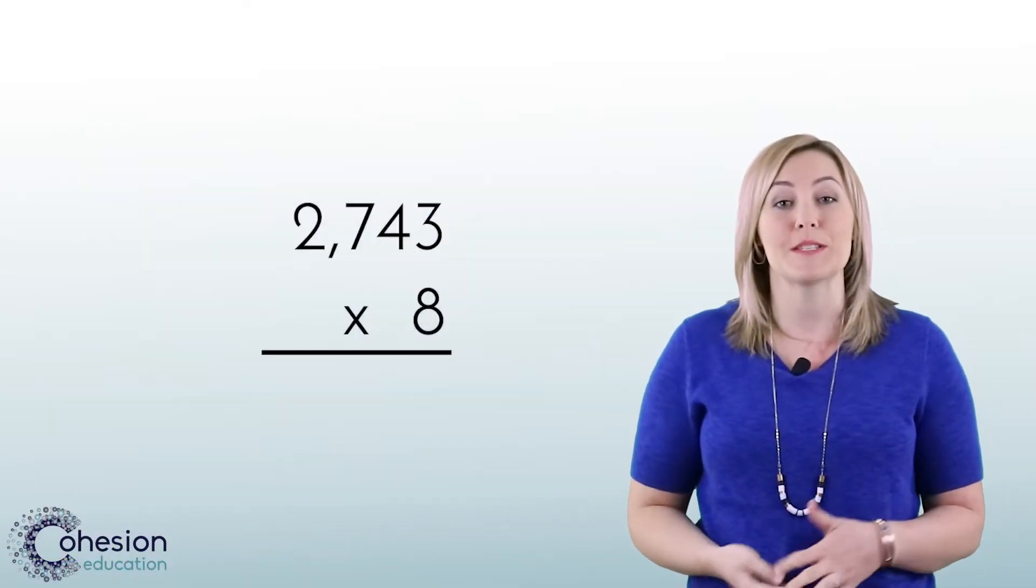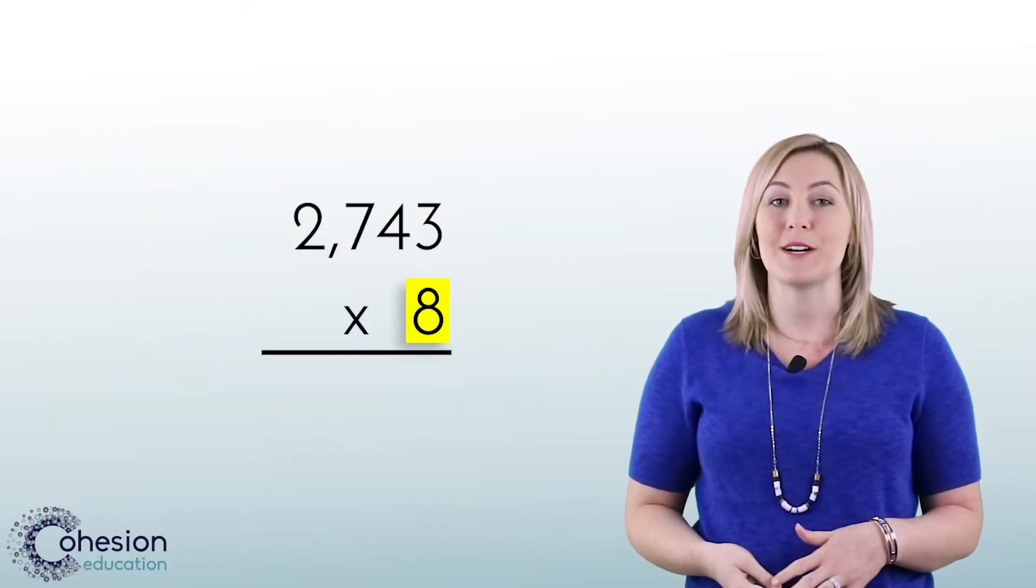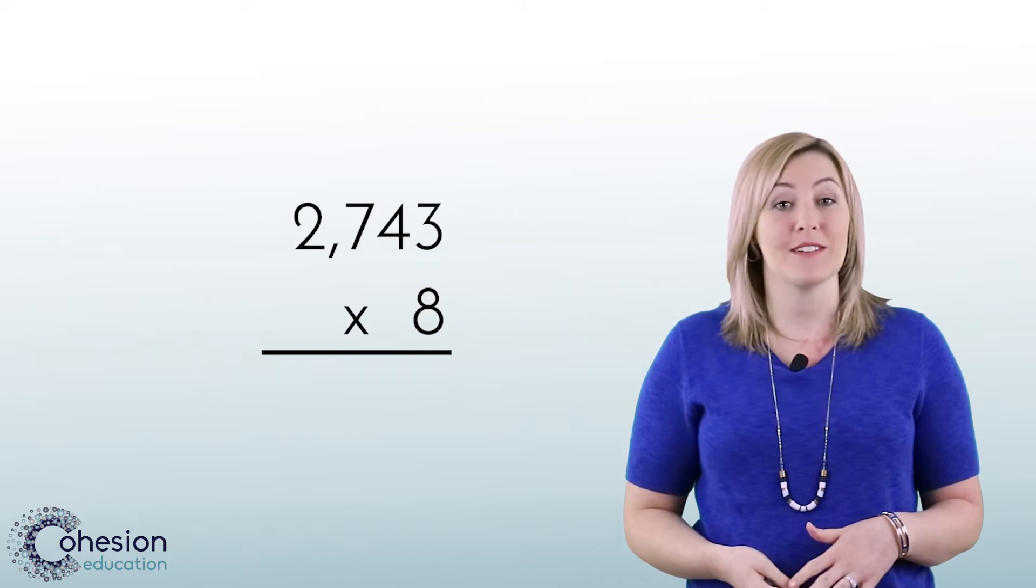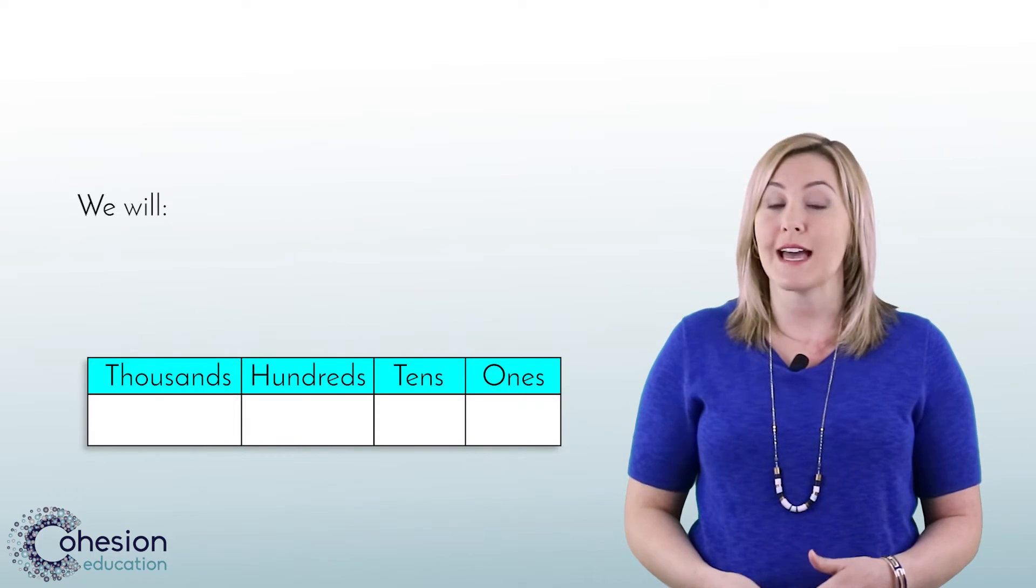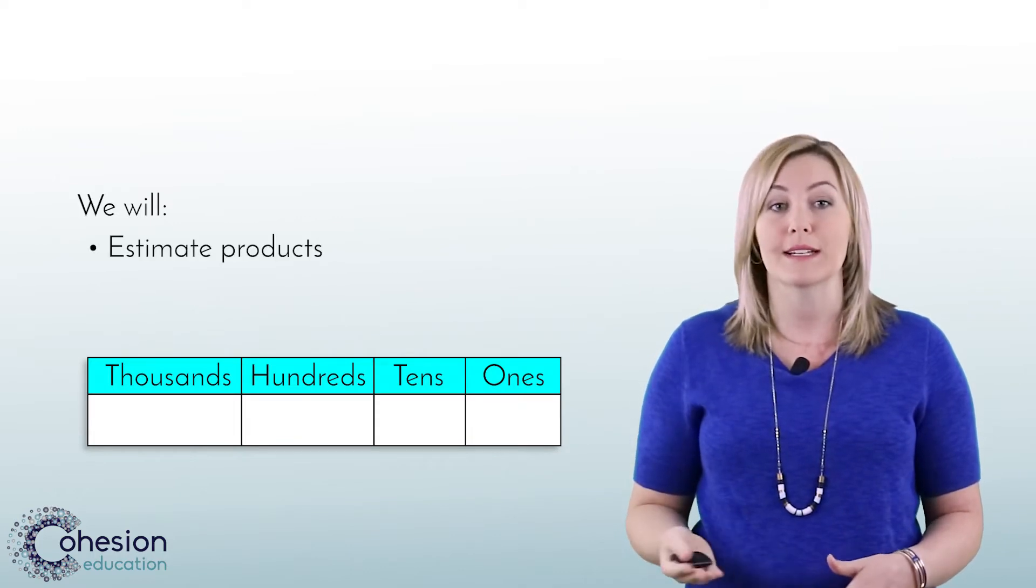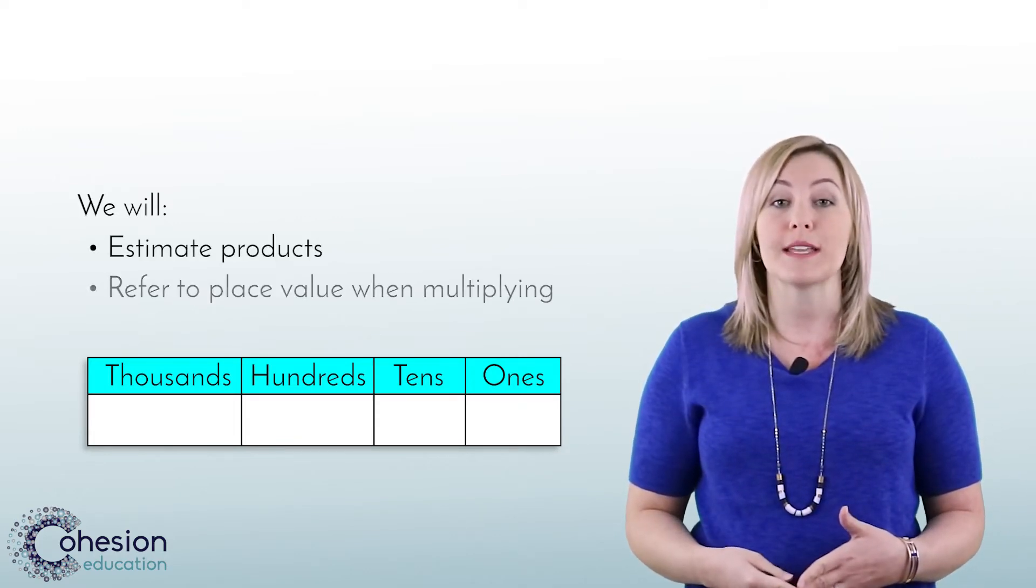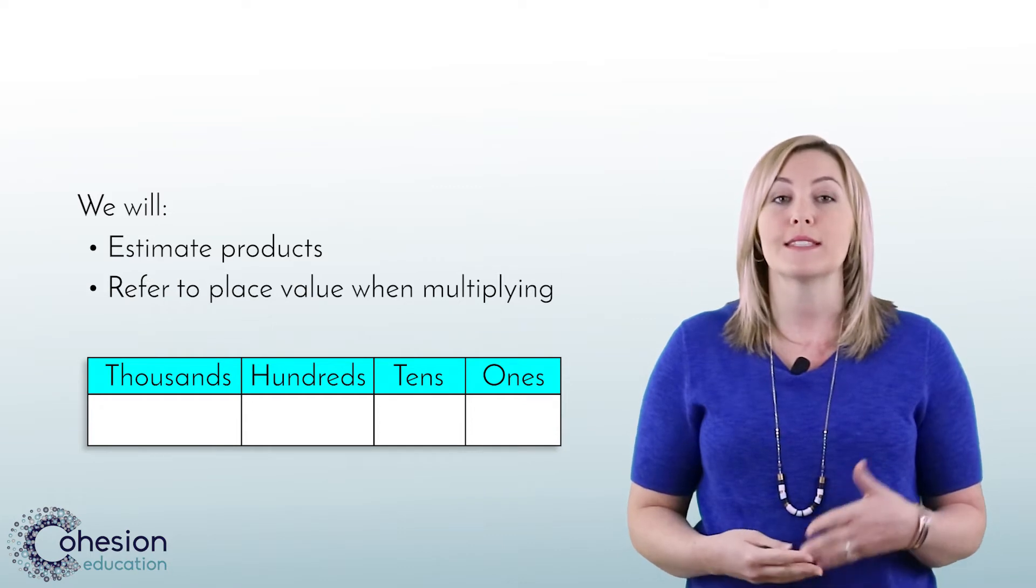In this lesson we will multiply multi-digit numbers by a one-digit number. We will heavily rely on quick and accurate recall of basic multiplication facts. We will first estimate the answers or products. We will also refer to place value when going through the steps of multiplication.